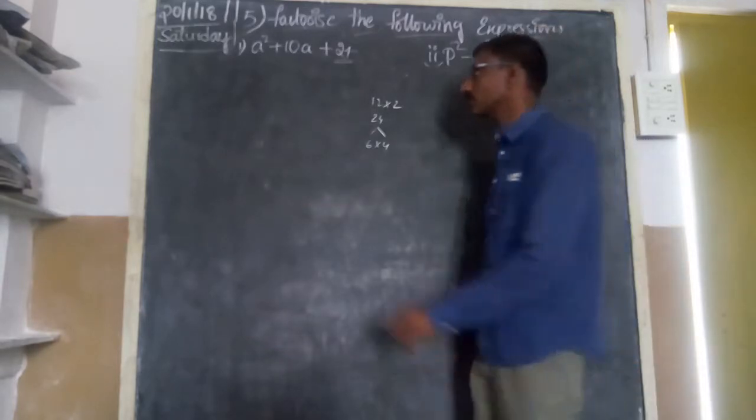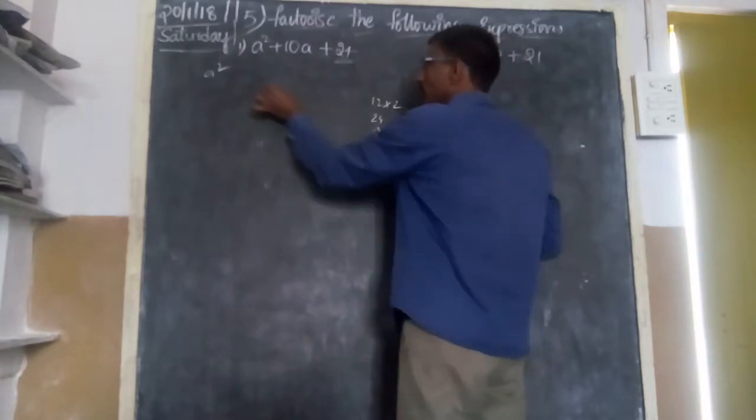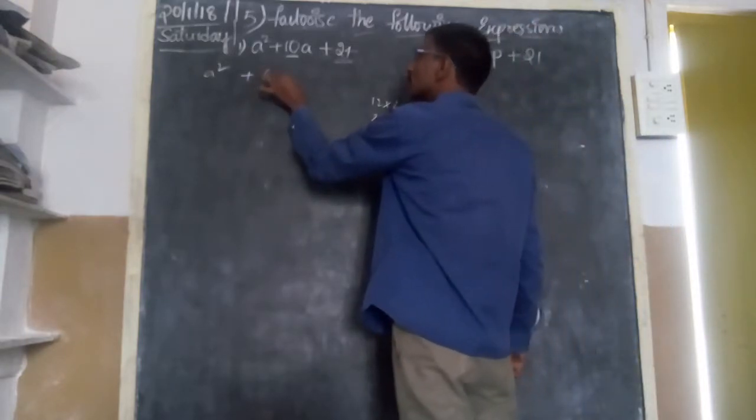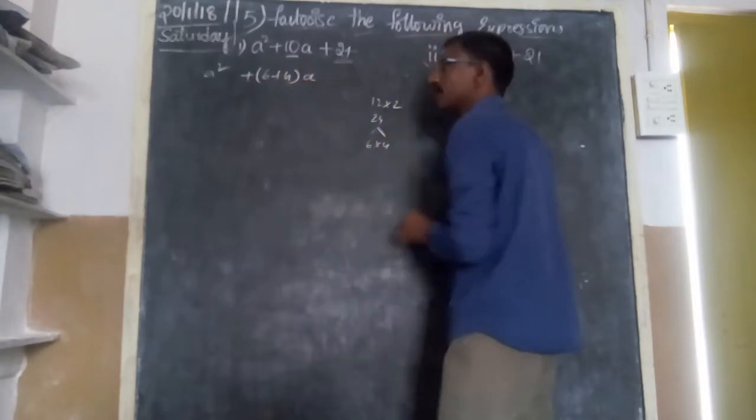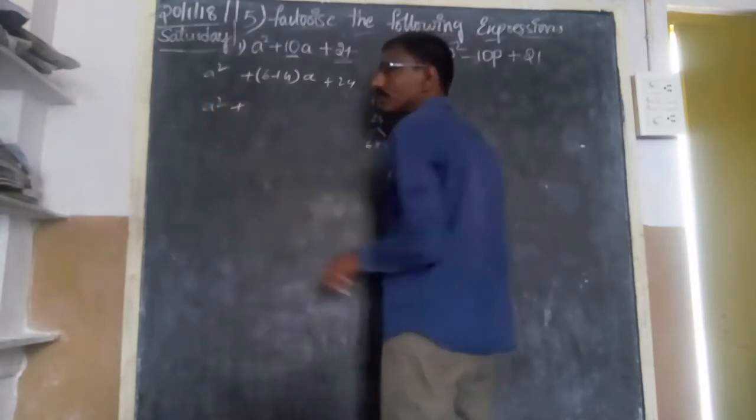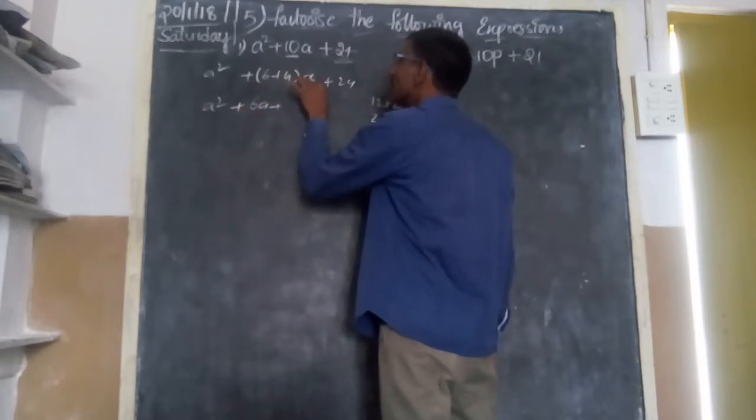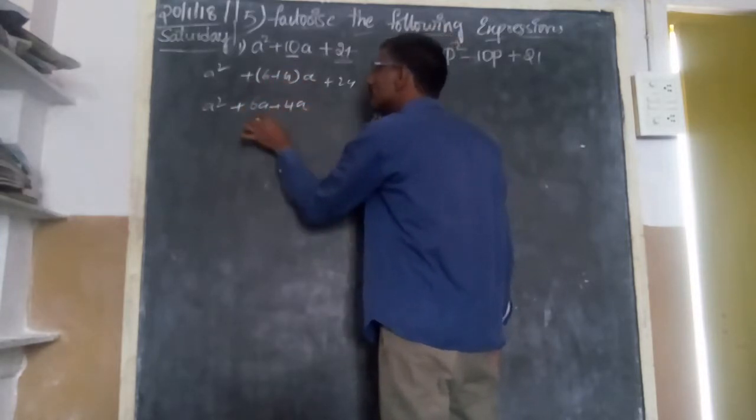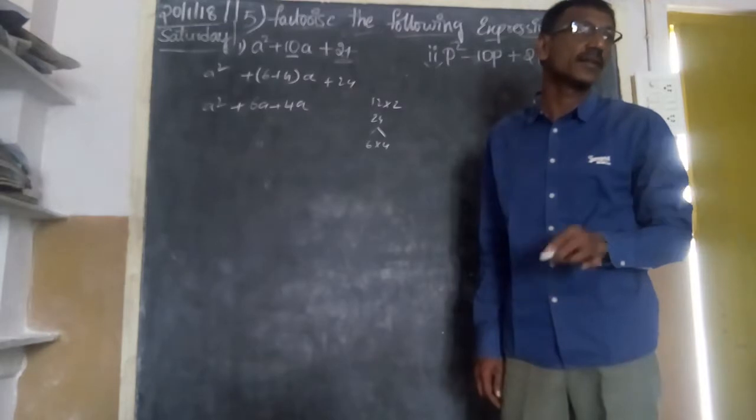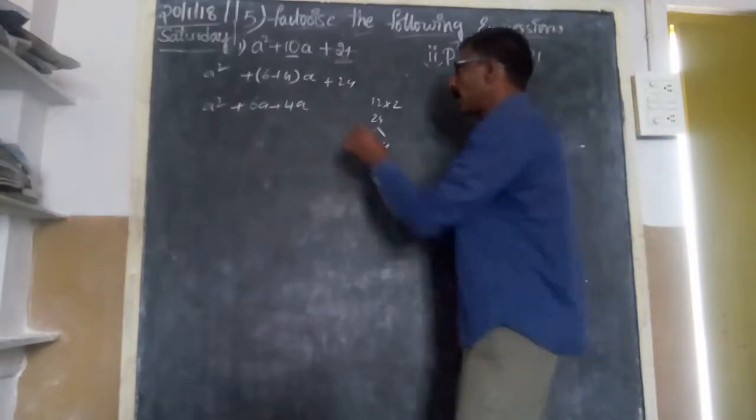Here we call it split the middle term. a² I will write as it is. Here 6 plus 4, I would like to write in place of 10. In place of 10, I would like to take 6 plus 4. So (6+4) into... What do you have? a, plus 24. Therefore a², 6 into a is 6a, 4 into a is 4a. So 6a plus 4a is nothing but how much? 10a.